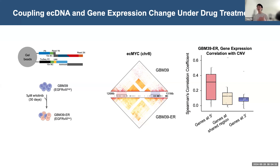In general, higher copy number can contribute to a higher gene expression level, but this increase is not consistent across genes at different regions, suggesting that there may be a more delicate regulatory mechanism besides copy number to maintain the expression level of genes on these special structural variations.